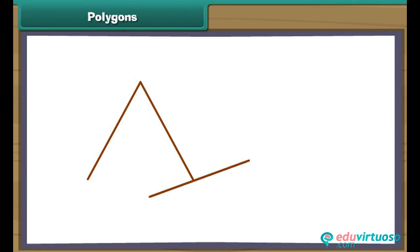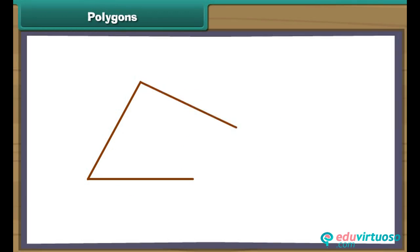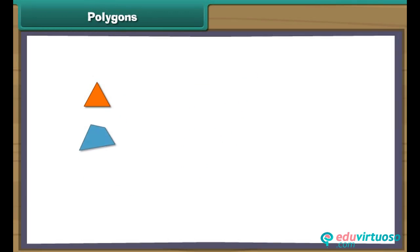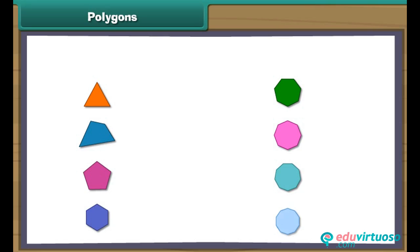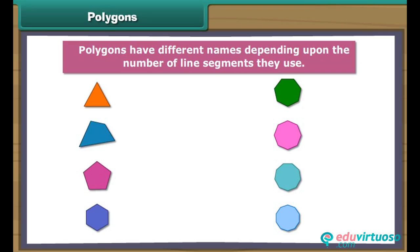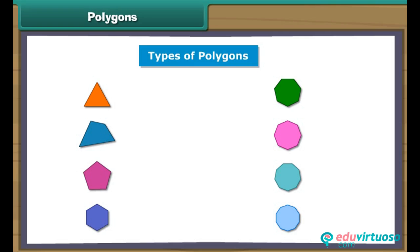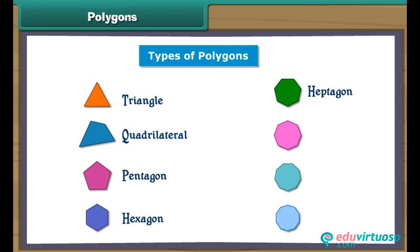We can form different shapes by enclosing them with line segments on all sides. Such closed figures are known as polygons. Polygons have different names depending upon the number of line segments they use. The types of polygons are: triangle, quadrilateral, pentagon, hexagon, heptagon, octagon, nonagon and decagon. Now we will learn about each polygon in detail.